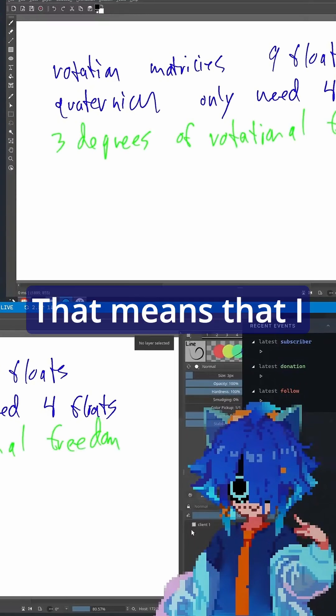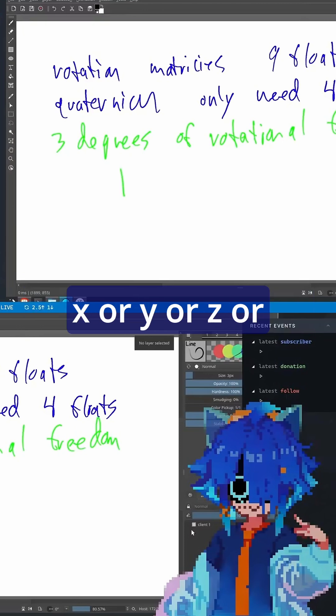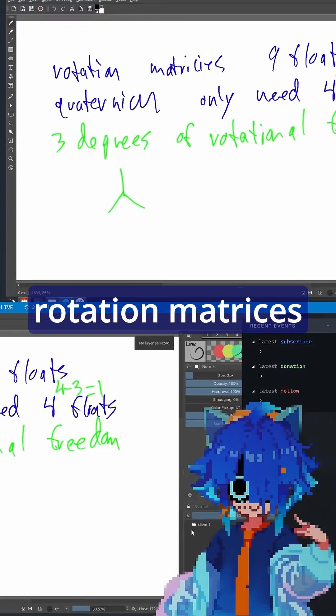So what does that mean? That means I can rotate around X or Y or Z or whatever I want. So a quaternion wastes one float, four minus three is one, whereas a rotation matrix wastes six floats, nine minus three is six.